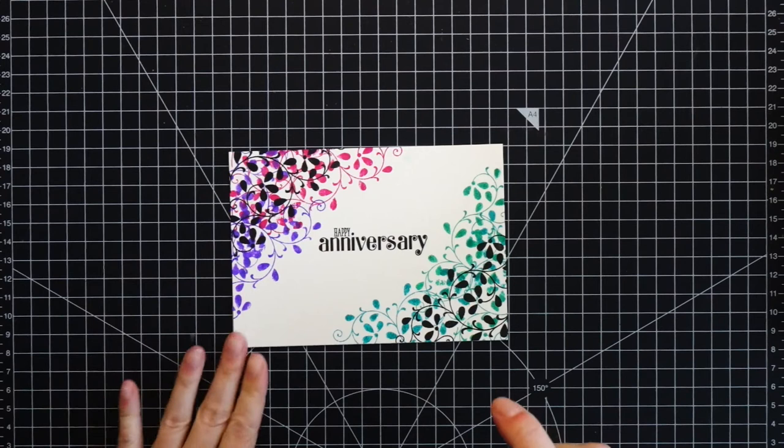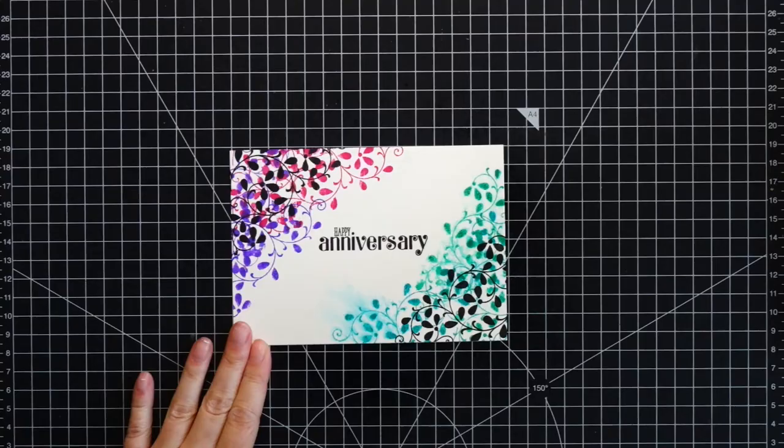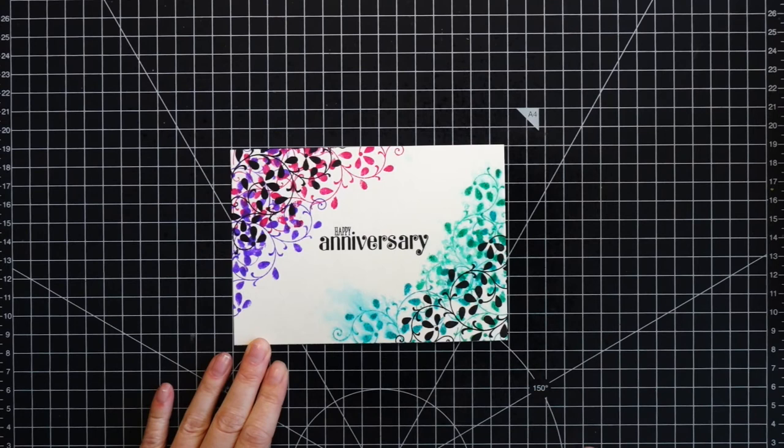Once the water touched the images that I stamped with the Distress Inks, the stamped image stayed visible, but the colors mixed with water and spread out, creating this organic, very soft and slightly messy watercolor effect.